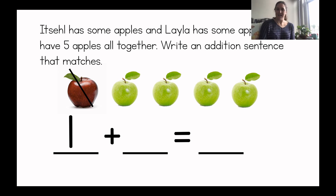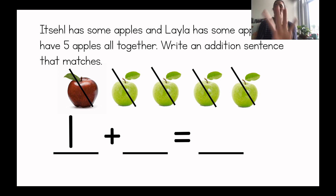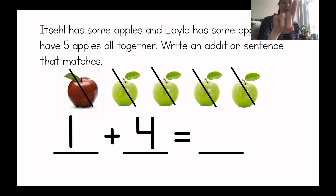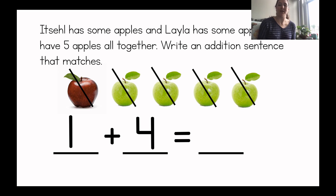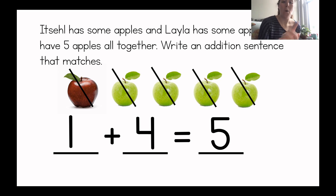So that means that the other apples are Layla's. Let's count how many apples Layla has and write the number. One, two, three, four. So Layla has four apples. So we'll write the four. Okay, so read that with me. One plus four equals — equals what? We have to count how many there are all together. Count them with me. One, two, three, four, five. So what number do we write? Write a five. Okay, so it says one plus four equals five. We wrote an addition number sentence that matches the picture.